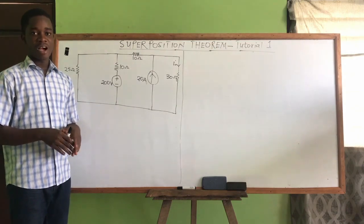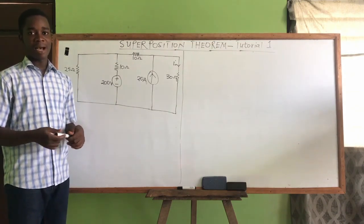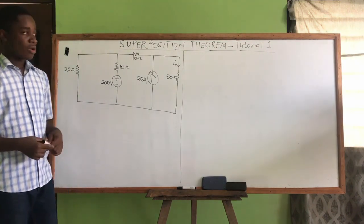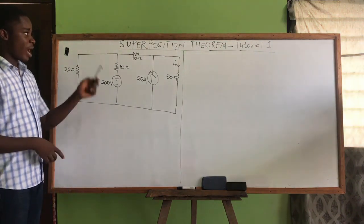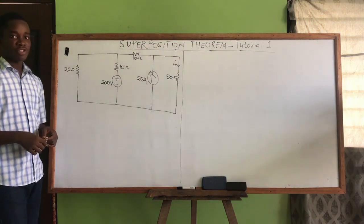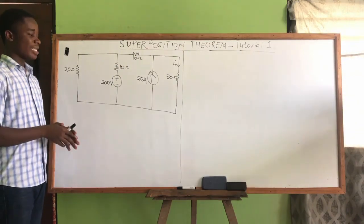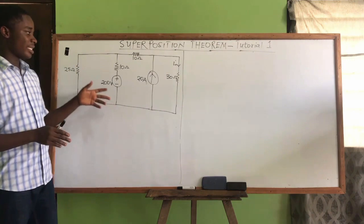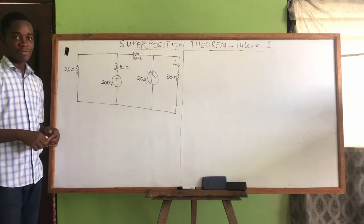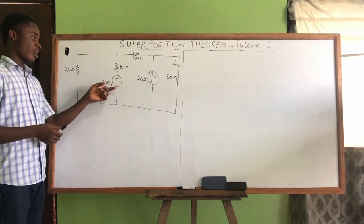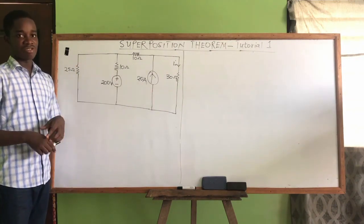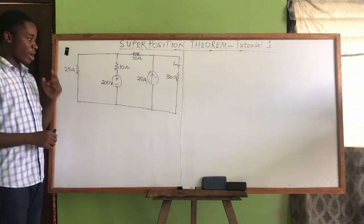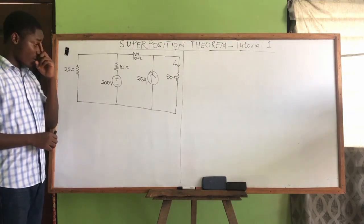The superposition theory works only when there are two or more sources. When you have two or more sources you can apply the superposition theory. Whenever you are applying it, the sources must act independently. Looking at this diagram we have two sources — a voltage source and a current source — and we are asked to find the current in this 30 ohm resistor.